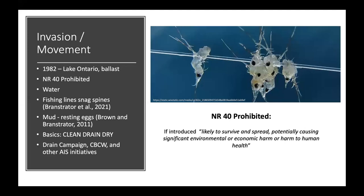This species is native to Eurasia. It first showed up in the Great Lakes in 1982 in Lake Ontario, most likely brought over in ballast water. In Wisconsin it's NR 40 prohibited, the highest level of regulation for an invasive species. It moves in a few different ways: first, through water — any water remaining in live wells, bait buckets, or anywhere in a boat could contain spiny water fleas. They also move quite readily by snagging on fishing lines.